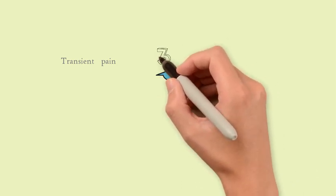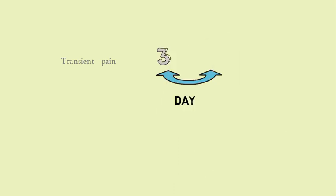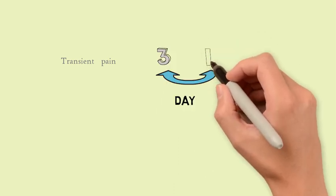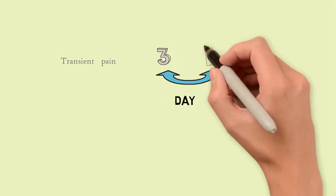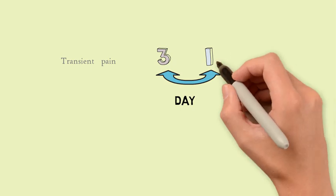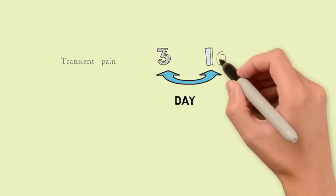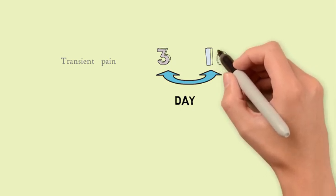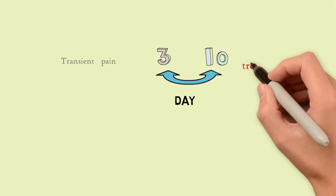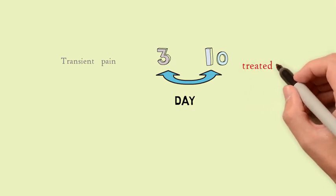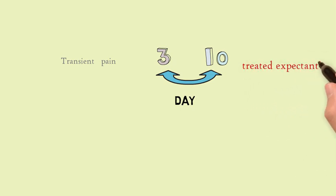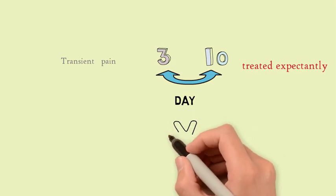Transient pain is a common side effect of methotrexate. It occurs between 3 and 10 days after starting treatment, and this pain is caused by tubal abortion and lasts for 4 to 12 hours.